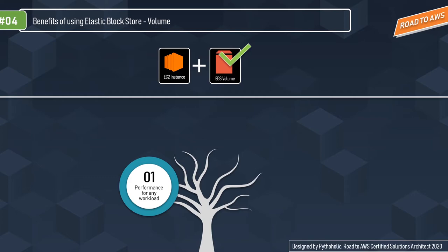Second benefit: ease of use. Amazon EBS volumes are easy to create, use, encrypt, and protect. The elastic volumes capability allows you to increase storage, tune performance, and change volume types without any disruption to your workloads. For backups, EBS snapshots allow you to easily take backups of your volumes for geographical protection of your data.